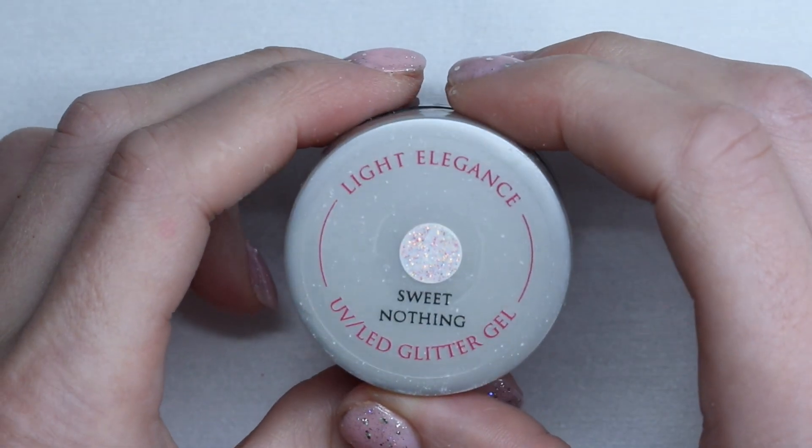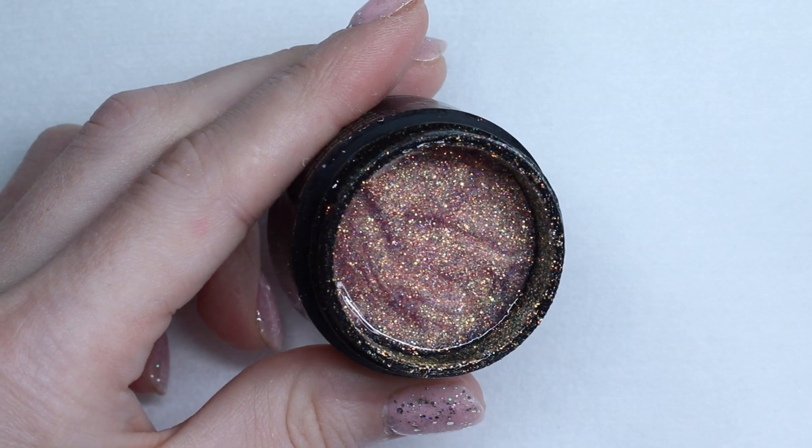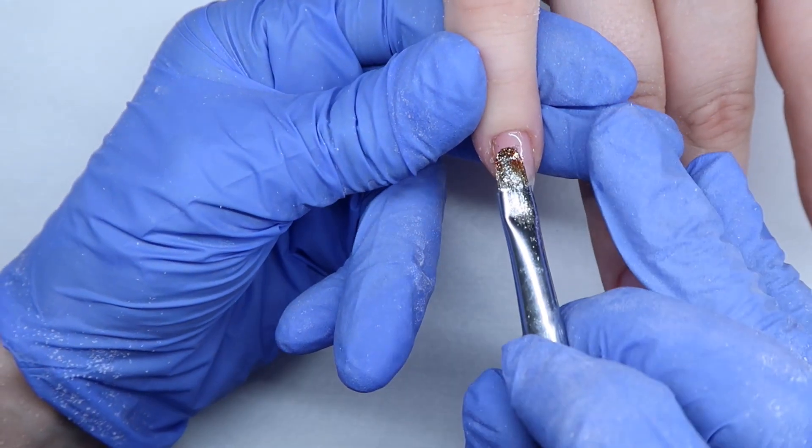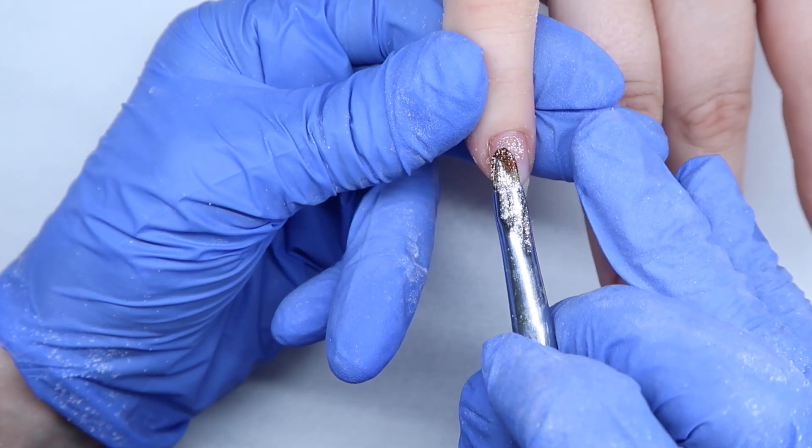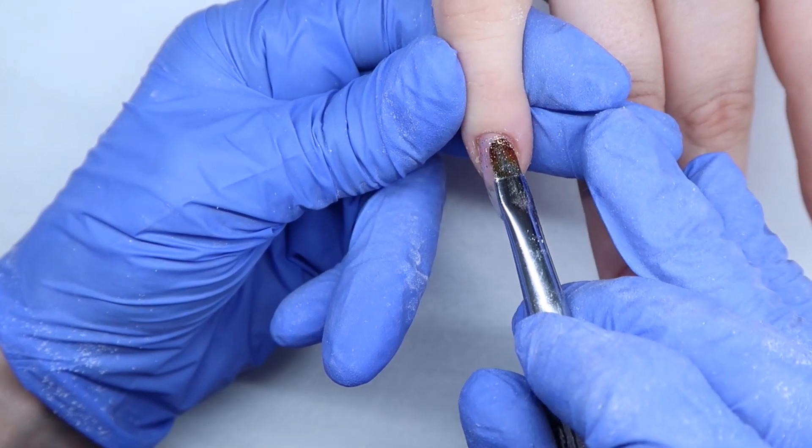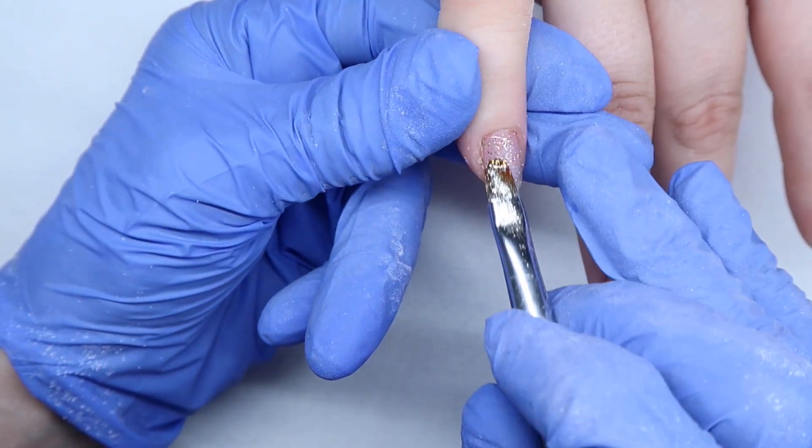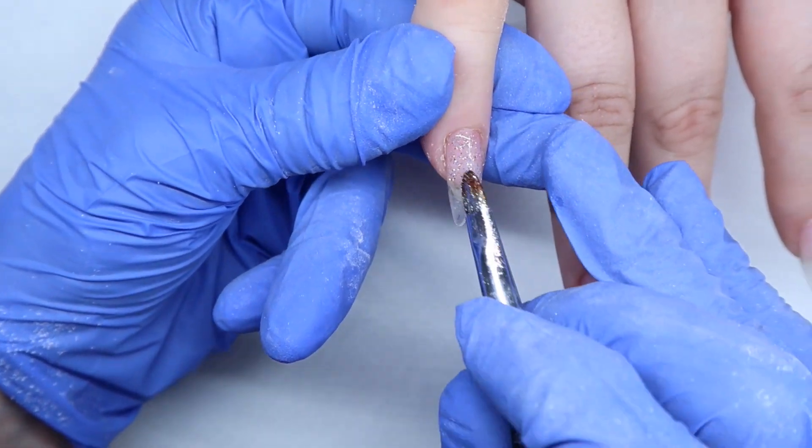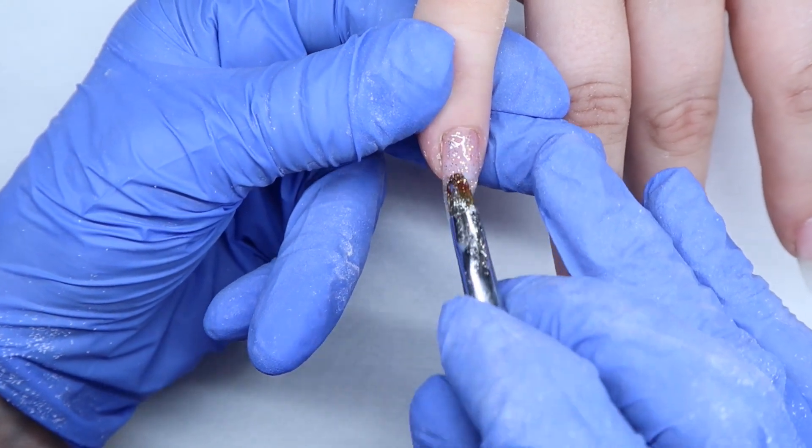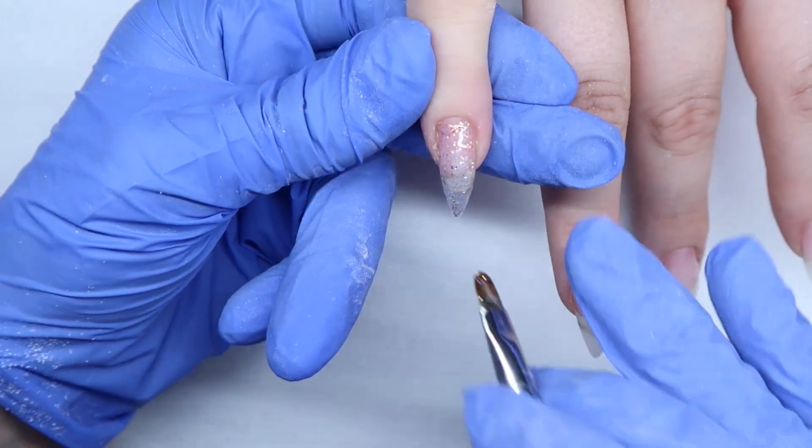And now I'm coming in with this color from Light Elegance called Sweet Nothings. It's a really pretty glitter. And I'm just applying this and I did switch my brush to the same brush, but it's my gel brush that I use for glitter. So make sure that if you're doing gel nails that you have one brush for clear and one brush for glitter.